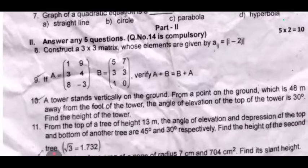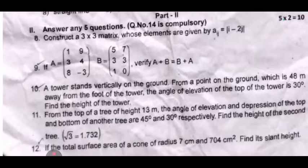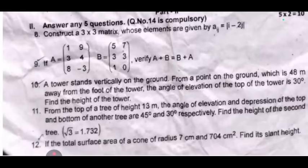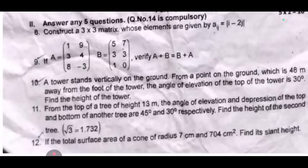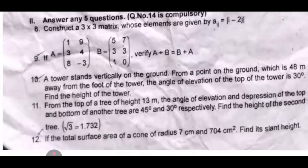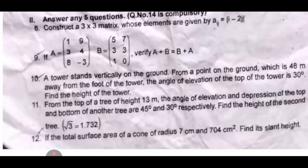Question 10: A tower stands vertically on the ground. From a point on the ground which is 48 meters away from the foot of the tower, the angle of elevation of the tower is 30 degrees. Find the height of the tower.